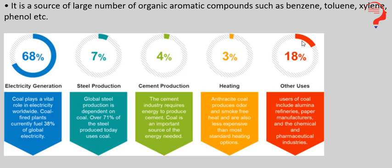18% of people use coal for other uses. Uses of coal include alumina refineries, paper manufacturers, and the chemical and pharmaceutical industries. Kuch aise industries bhi hain jo apne kaam ke liye coal burning ko use mein lete hain — jaise ki alumina refineries, paper manufacturers — inko jo heat availability chahiye hoti hai, jo bhi inki need hoti hai, woh saari coal burning se hi fulfil hoti hai.